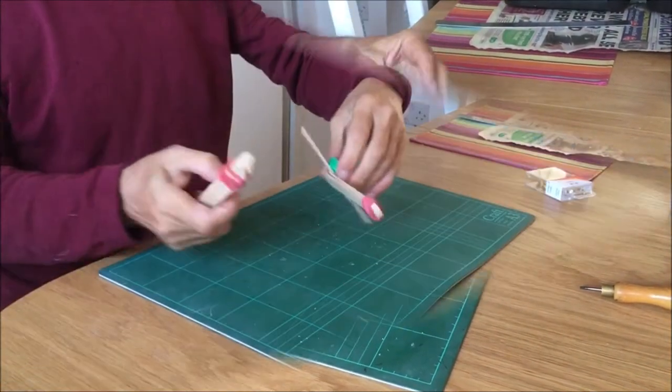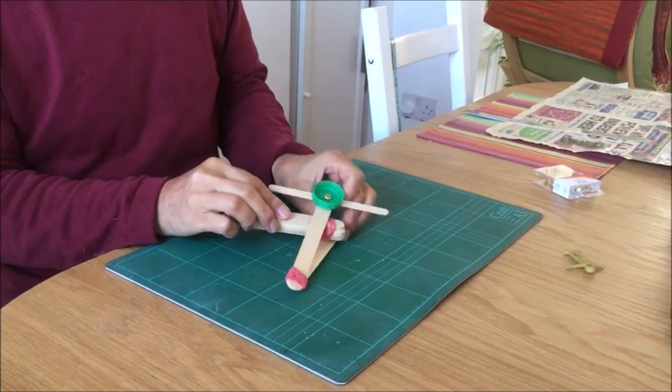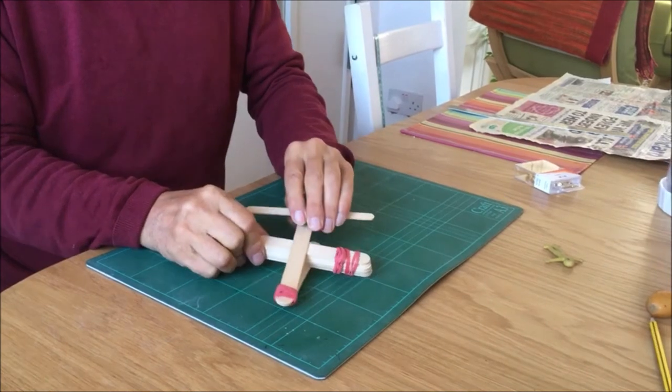Now we're ready to insert the fulcrum, which is the lighter longer sticks. Push that between - there's two at the bottom and one at the top.